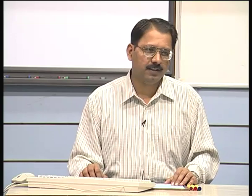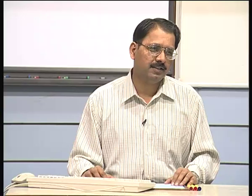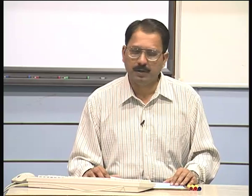Let us look at the algebraic form of a Hermite patch. The most standard form is a bicubic patch. Since surfaces have two parameters u and w, if the surface is cubic in both u and w you call it bicubic — this is the most common. One can also think of cubic-quartic, quartic-quartic, quartic-quintic, or cubic-quadratic patches. The most common version is the bicubic Hermite patch.